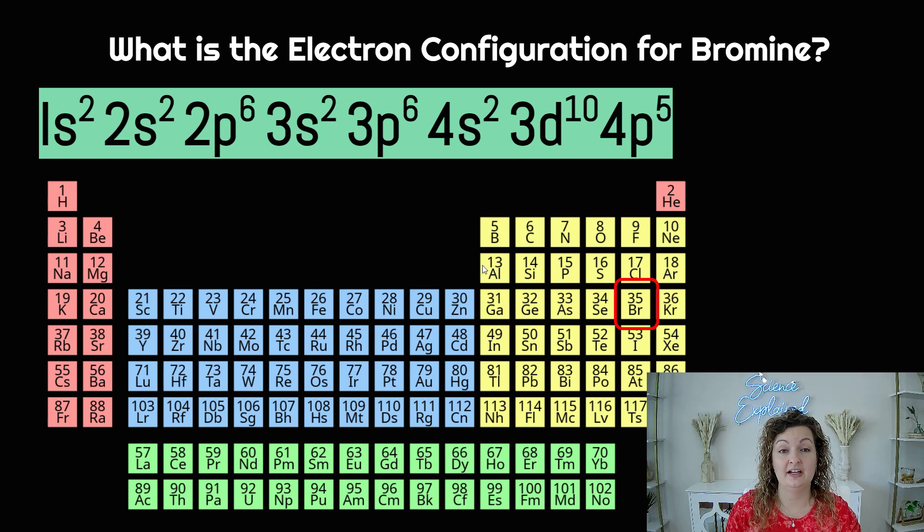Straight over. We're entering the P block now, but we're still in the third row. So 3P, and we're going to go over six. Go ahead and write that six.